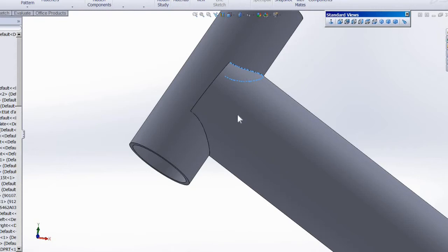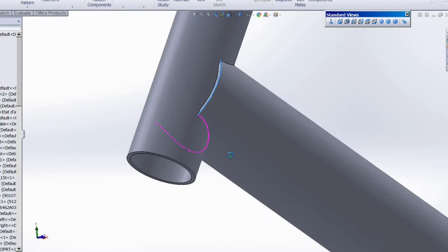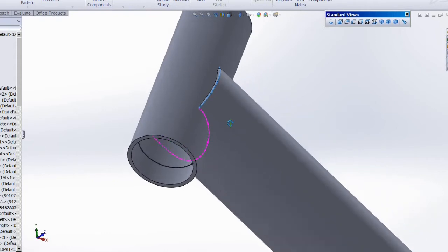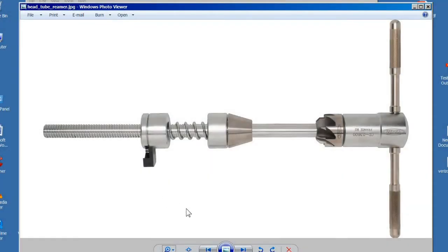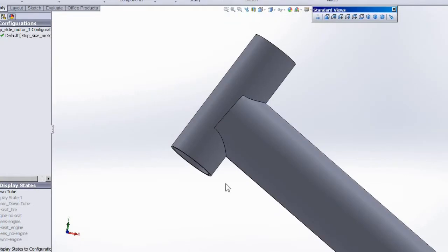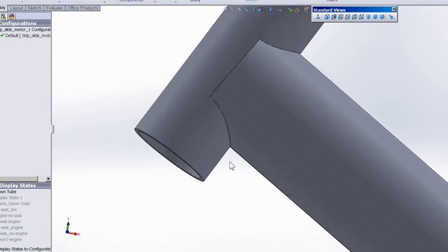One thing you have to think about is head tube distortion from welding. When you weld on the head tube it ovalizes a certain amount. The correct way to deal with this is to machine your head tube slightly undersized and then ream it to the final size after welding with a head tube reamer facer. These tools though are expensive, they're about four to five hundred dollars.